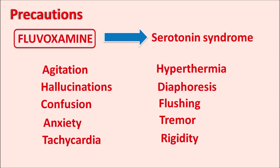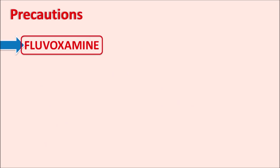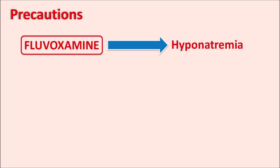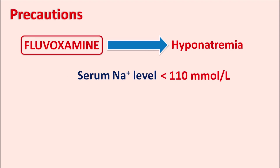Drugs that also produce serotonin syndrome should be carefully combined with fluvoxamine. For example, MAO inhibitors can increase serotonin syndrome when combined with fluvoxamine. Similarly, this drug can produce hyponatremia, where serum sodium levels are reduced to less than 110 millimoles per liter.